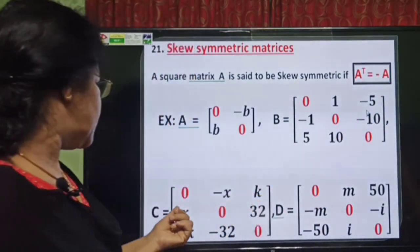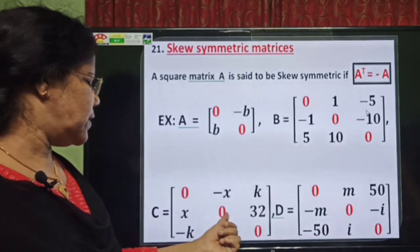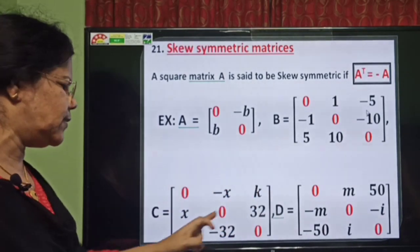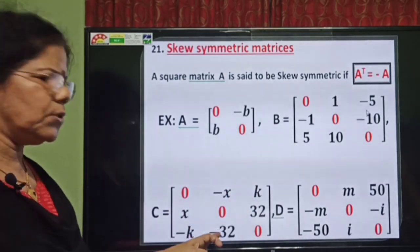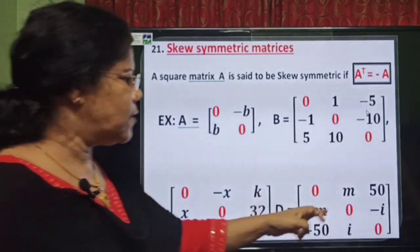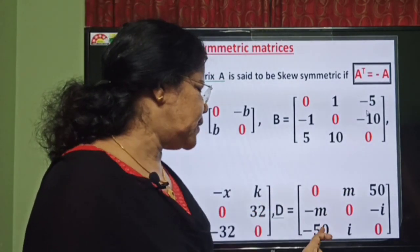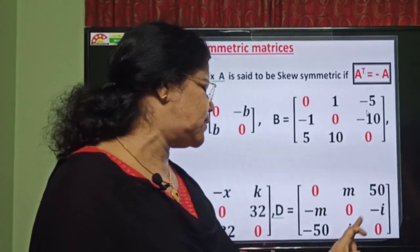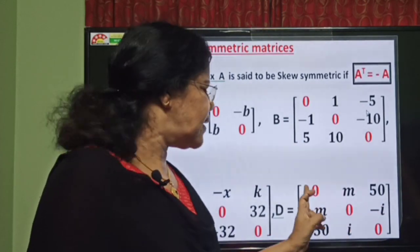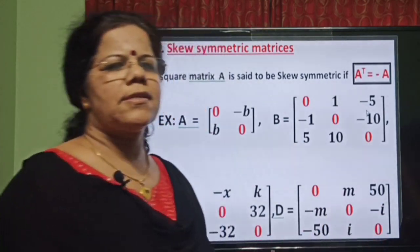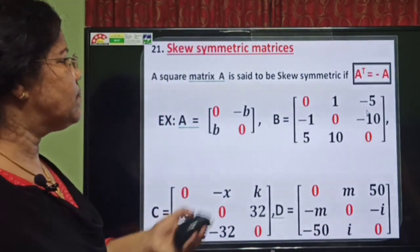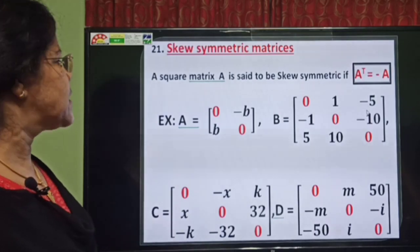In the next example, the diagonal elements are 0, 0, 0. Entries include negative X and X, K and negative K, 32 and negative 32, negative M and M, negative 50 and 50, and I and negative Y. Diagonal elements are 0. Such matrices are known as skew-symmetric matrices.